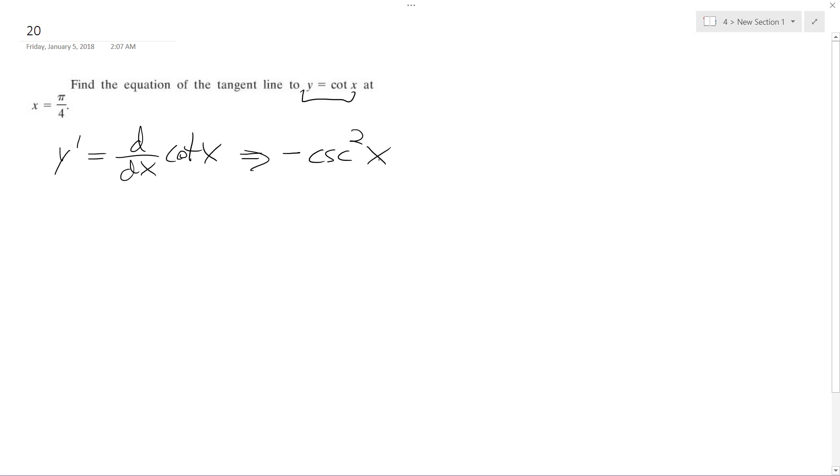So if I plug pi over 4 into that, it's the same thing as 1 over negative sine of pi over 4, which is going to be equal to... actually, excuse me, squared. So it's the same thing as 1 over... that's not negative pi over 4, it's pi over 4.